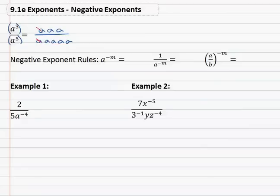So if we divide out an a, divide out another a, divide out another a, we're left with a squared in the denominator.